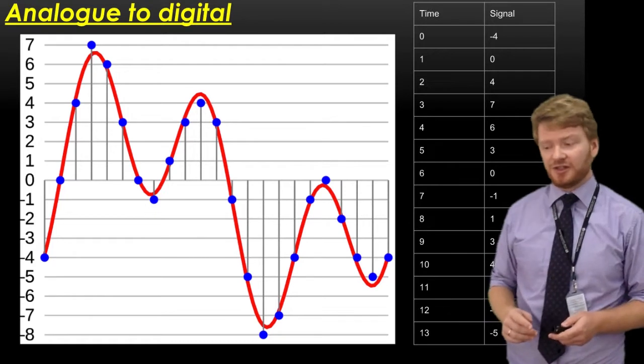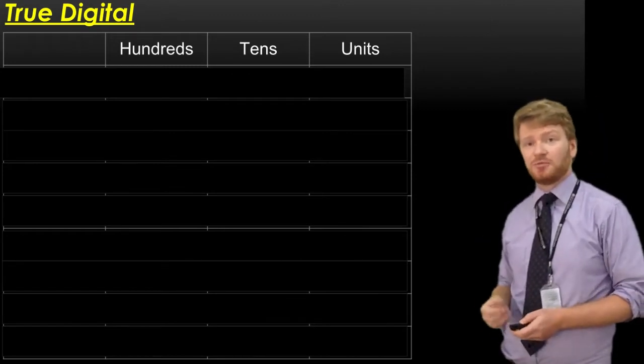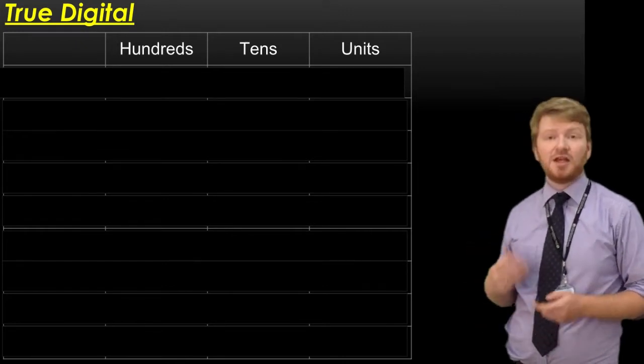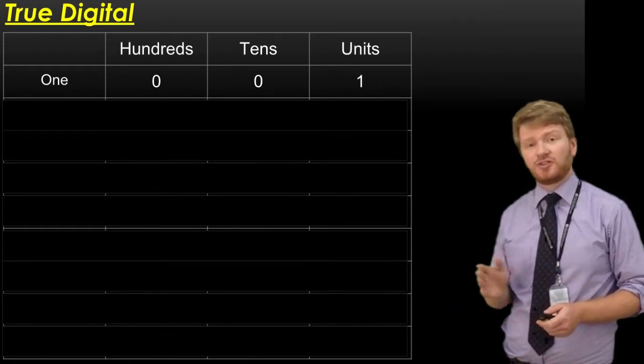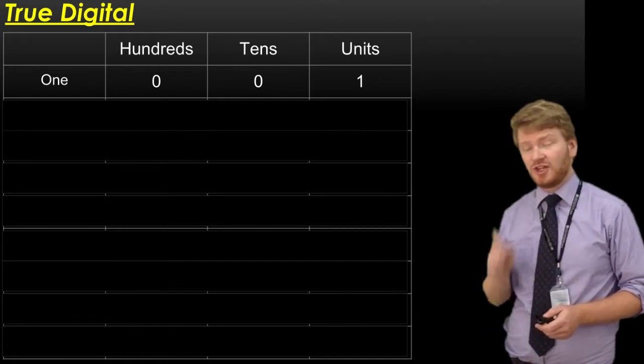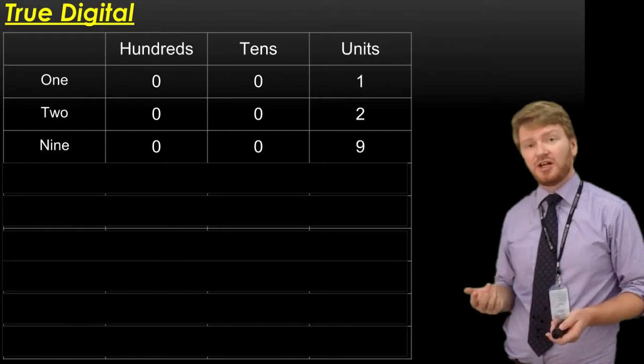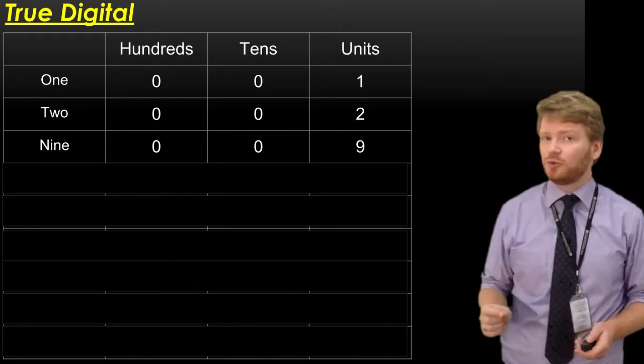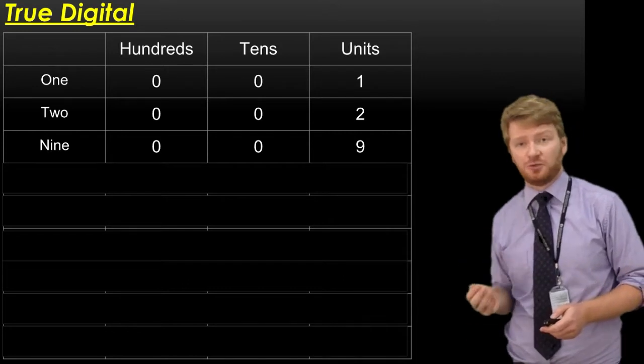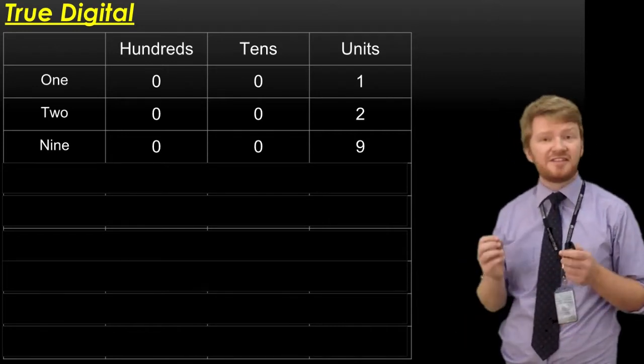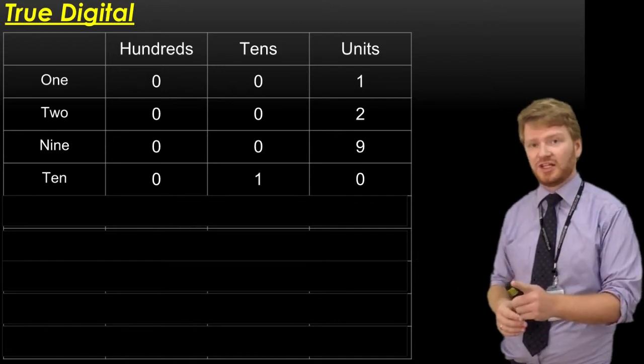However, computers don't understand anything we've written there. We need to understand what digital really means. We use the Arabic number system based around base 10. If you think back to primary school, we have hundreds, tens, and units. Number 1 is no hundreds, no tens, and 1 unit. Number 9 is still no hundreds, no tens, and a 9. When we get to 10, we can't store the value 10 in the units column. We only have 9 of them.